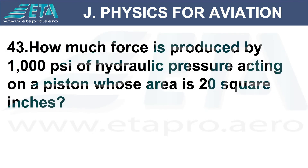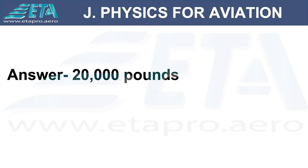How much force is produced by 1,000 PSI of hydraulic pressure acting on a piston whose area is 20 square inches? Answer: 20,000 pounds.